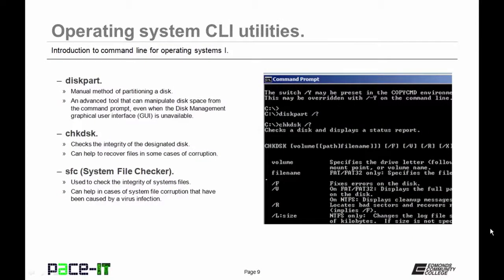For hard drive management: diskpart (disk partitioning) is a manual method of partitioning a disk — an advanced tool that can manipulate disk space from the command prompt even when the disk management GUI is not available. CHKDSK (check disk) checks the integrity of the designated disk and can help recover files in some cases of corruption. A companion command is SFC (system file checker), which checks the integrity of system files on a disk and can help in cases of system file corruption caused by virus infection.